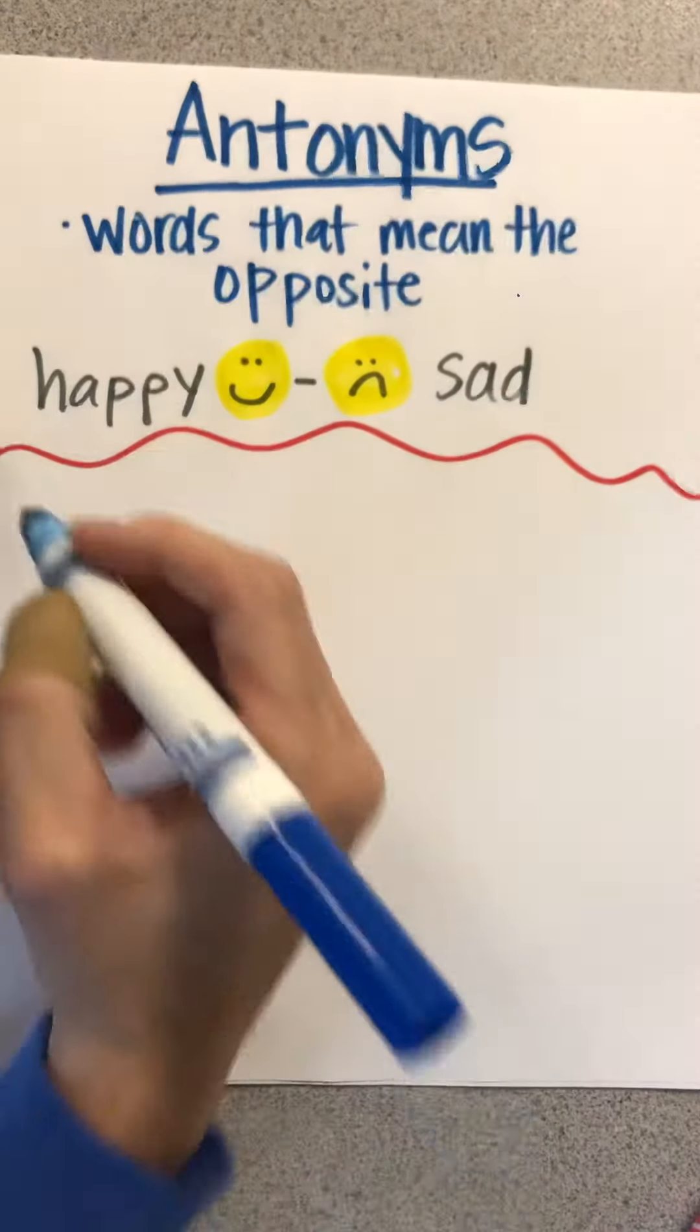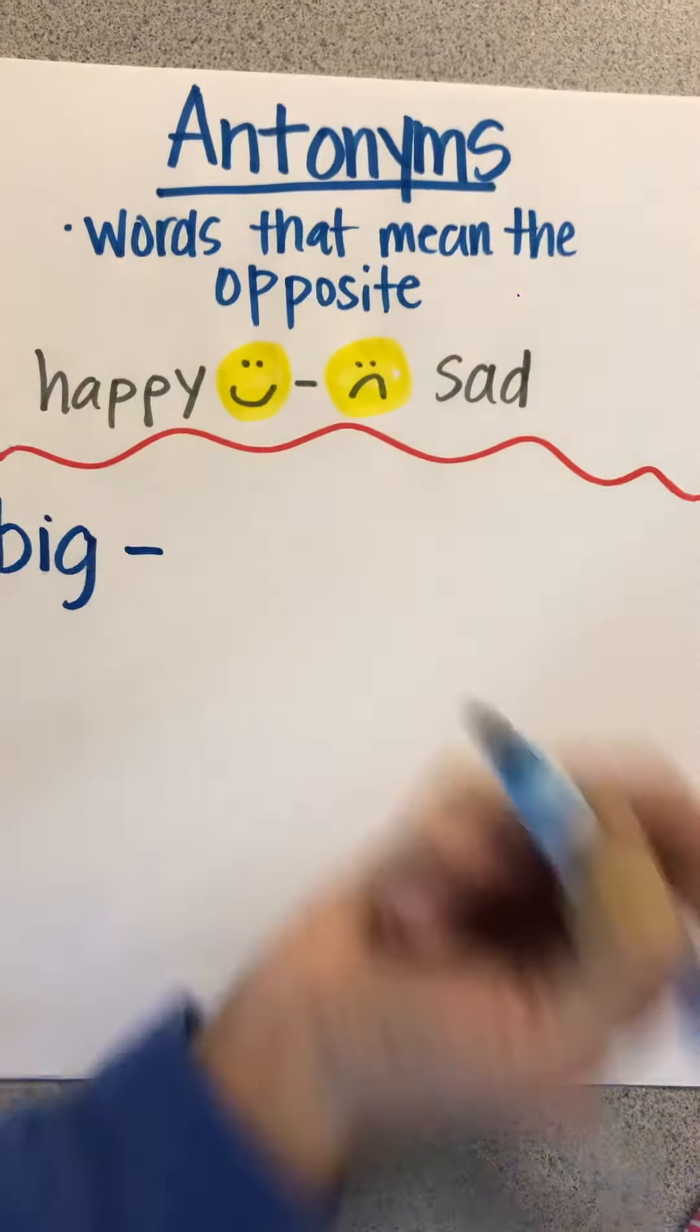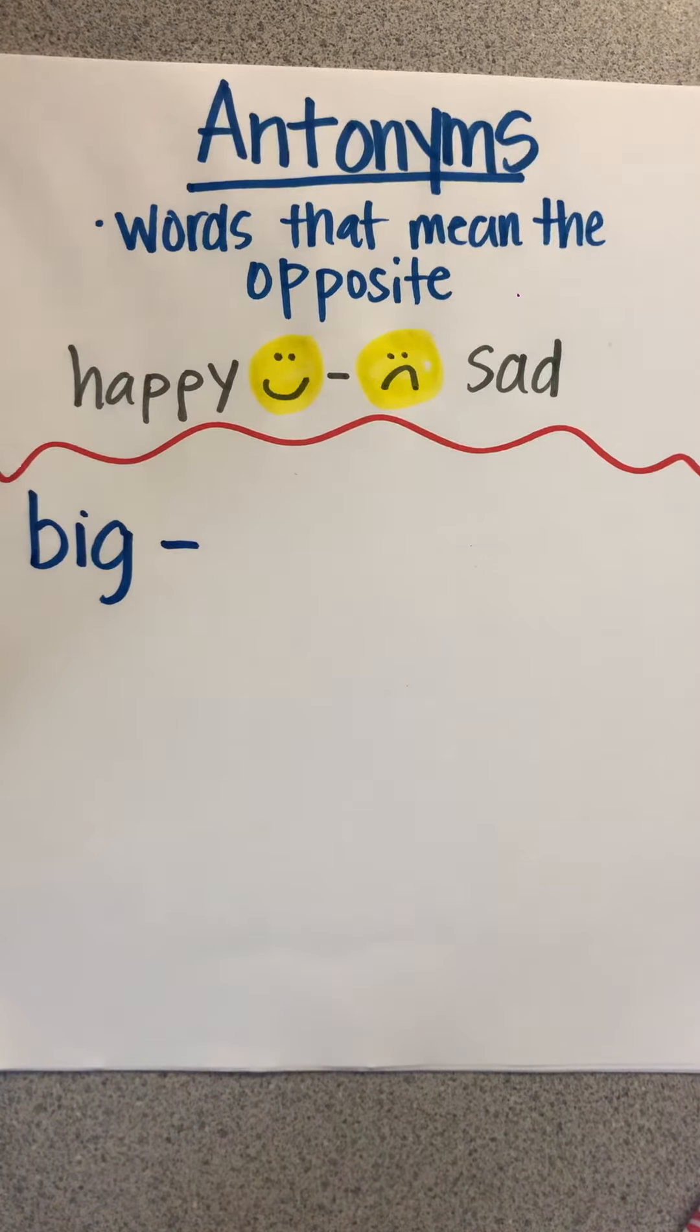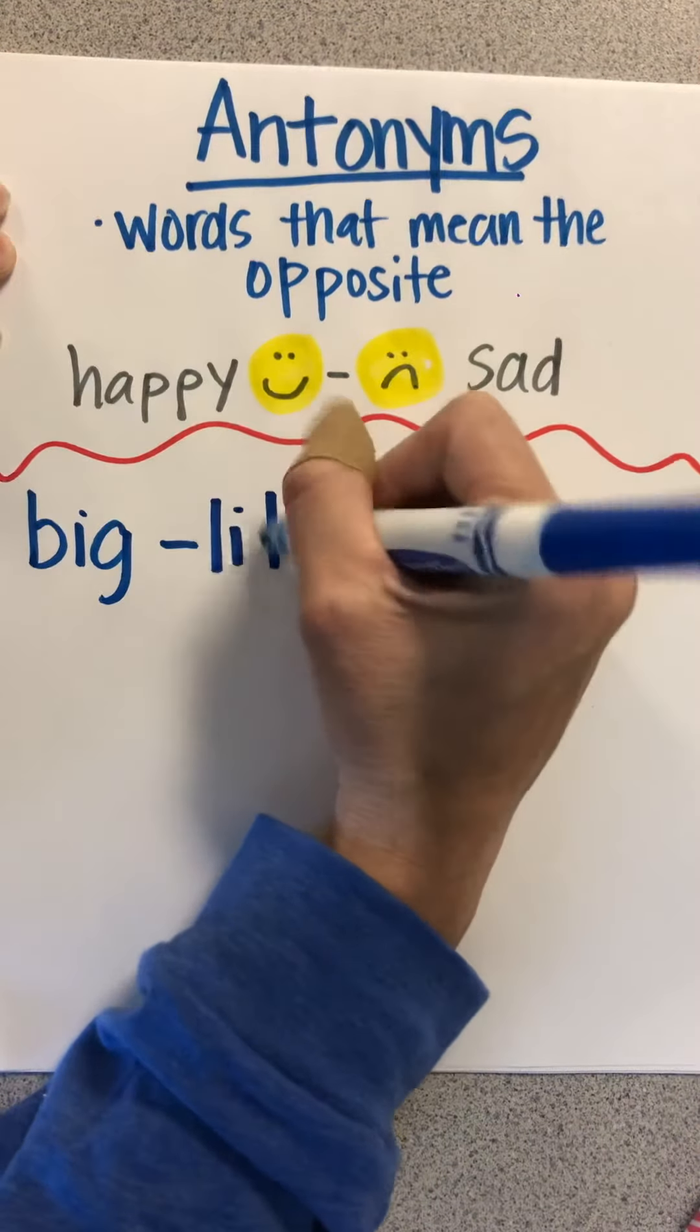So look at the word big. And what's the opposite of big? There's several different words. You could say small or little. The opposite of big, I'm going to write, is little.